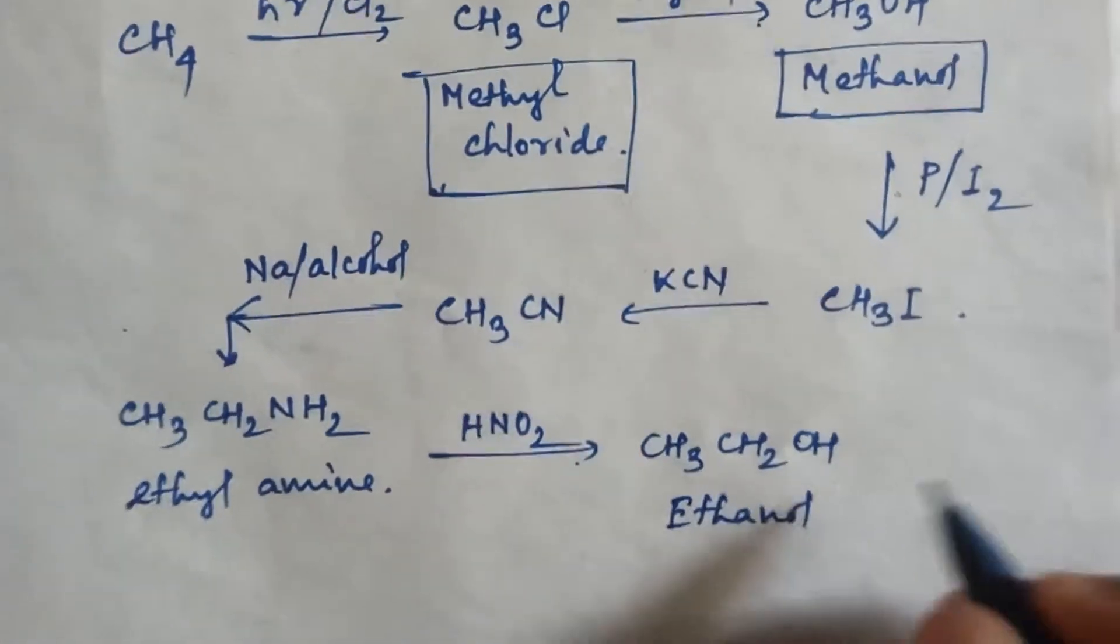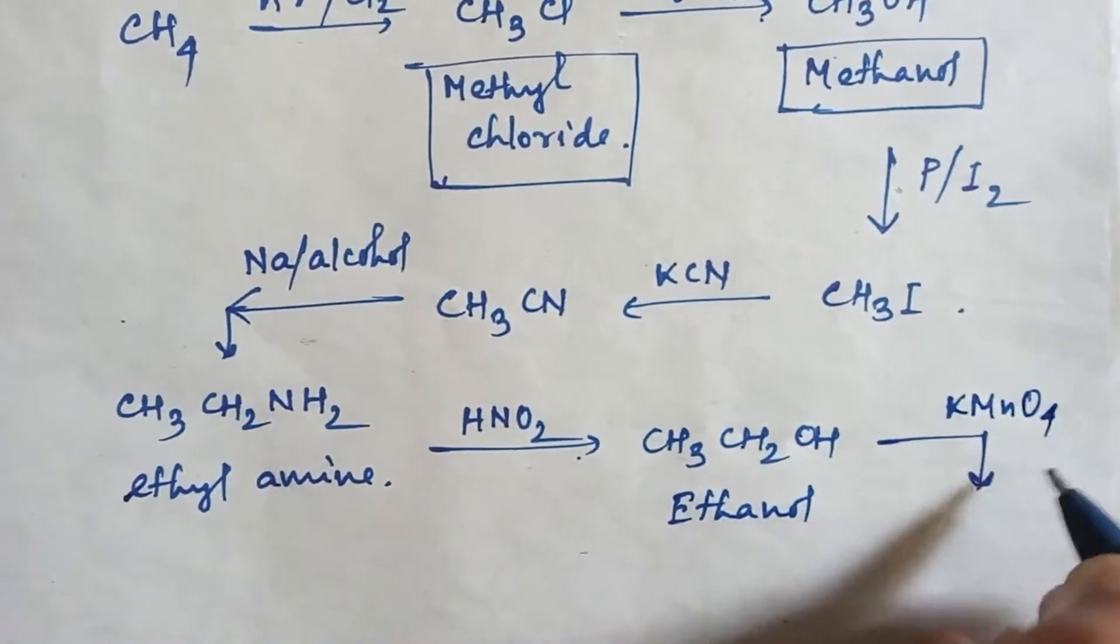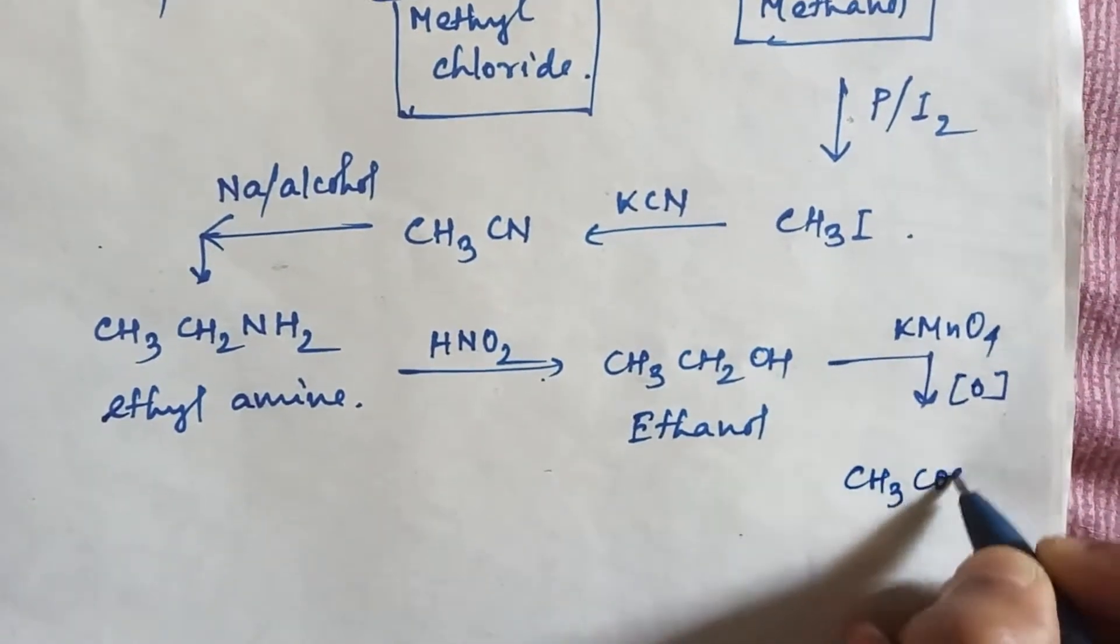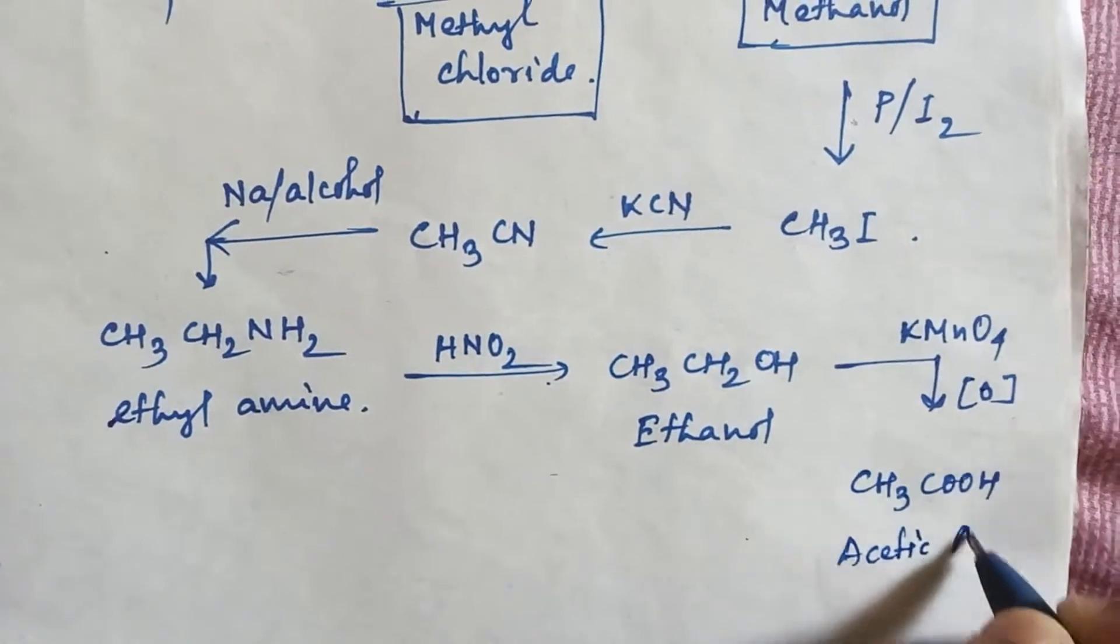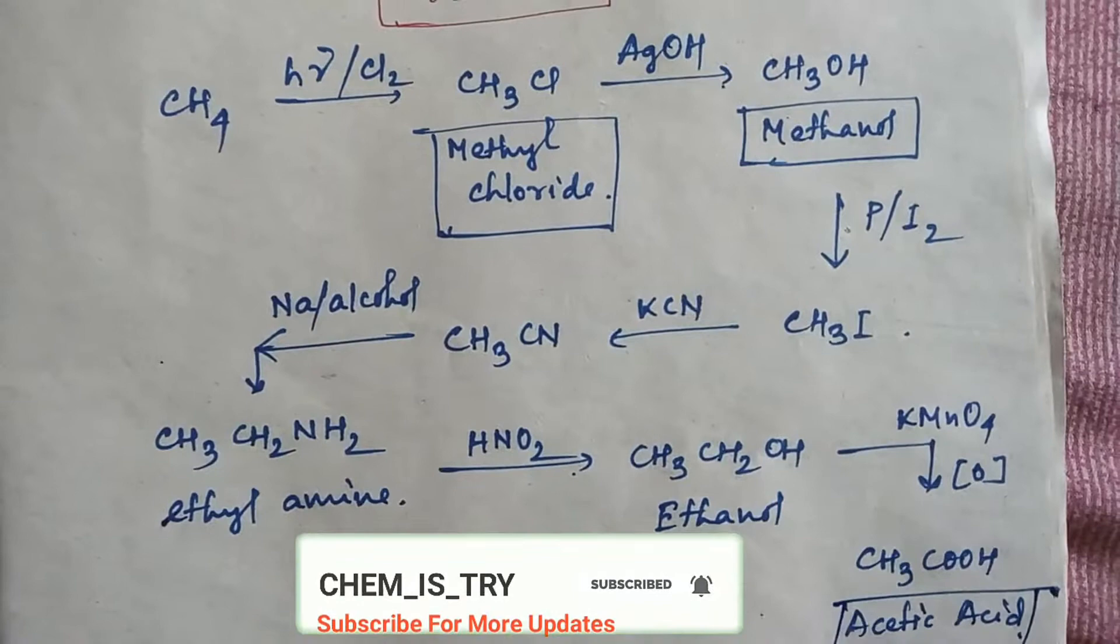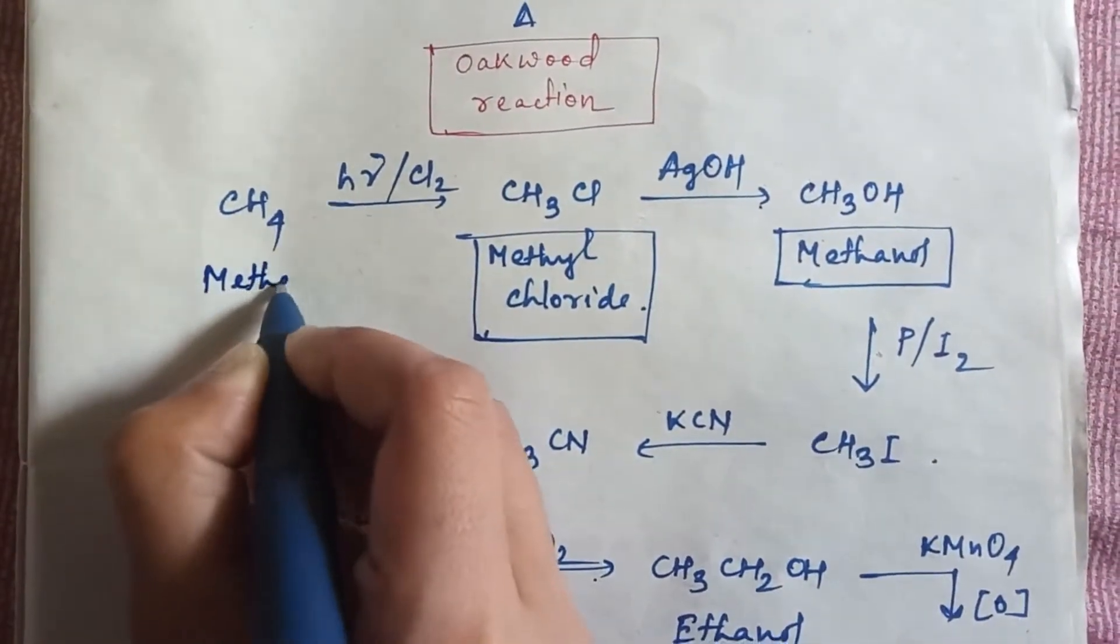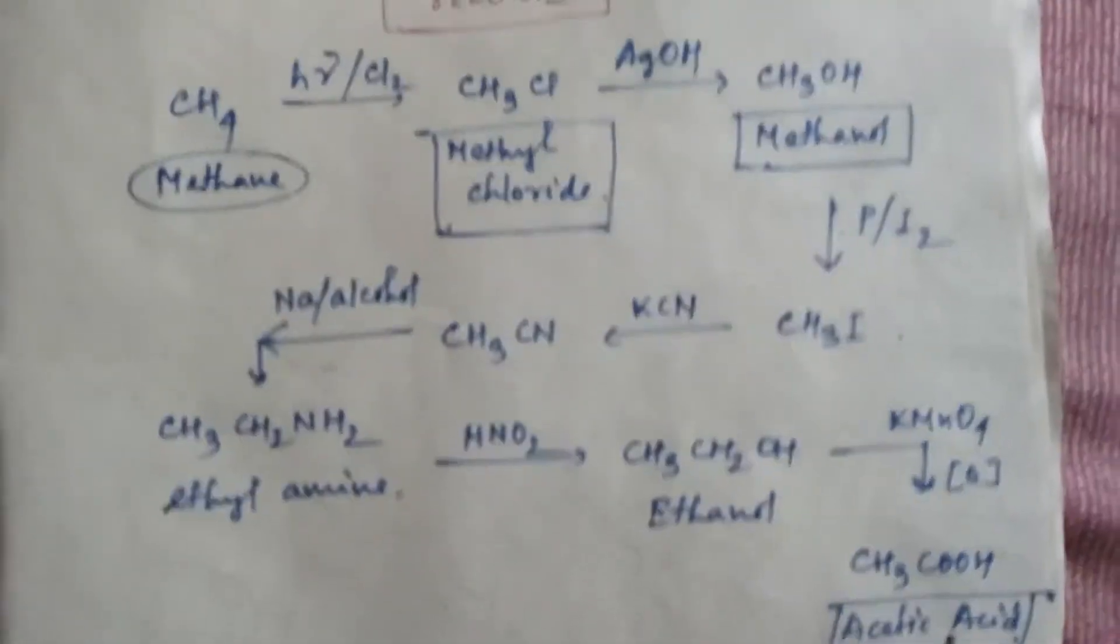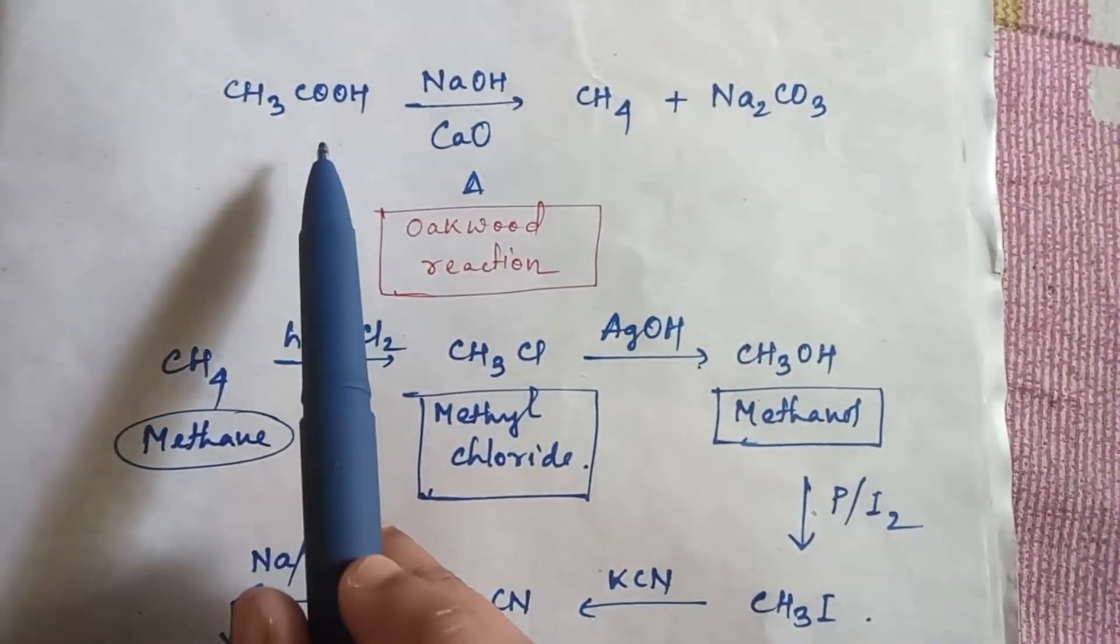In ethanol, if you do oxidation by KMnO4, you will get acetic acid. So this is the process of conversion from methane to acetic acid, and this is the first process from acetic acid to methane.